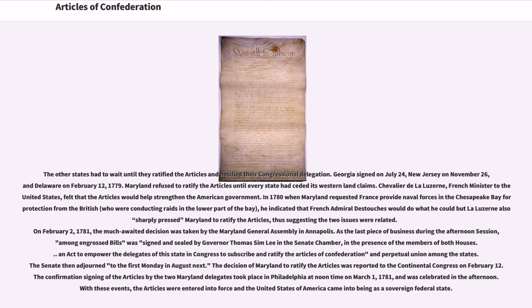On February 2, 1781, the much-awaited decision was taken by the Maryland General Assembly in Annapolis. An act was signed and sealed by Governor Thomas Sim Lee in the Senate chamber to empower the delegates of this state in Congress to subscribe and ratify the Articles of Confederation and Perpetual Union among the states. The decision of Maryland to ratify was reported to the Continental Congress on February 12. The confirmation signing by the two Maryland delegates took place in Philadelphia at noontime on March 1, 1781, and was celebrated in the afternoon. With these events, the Articles were entered into force and the United States of America came into being as a sovereign federal state.